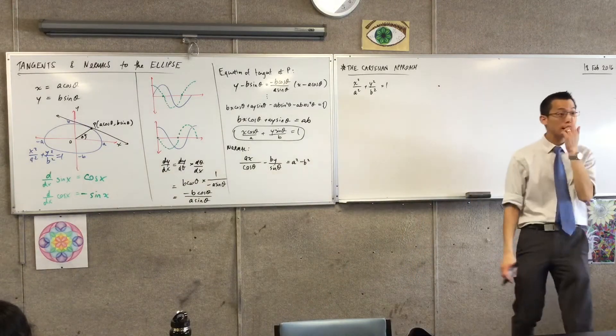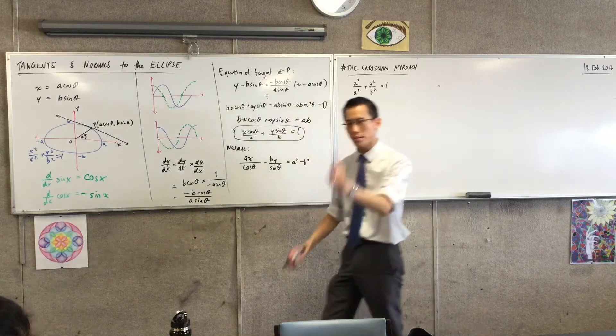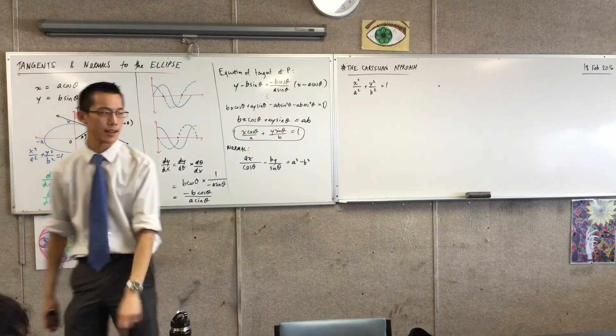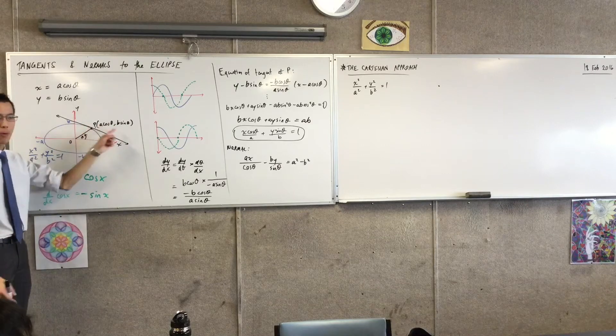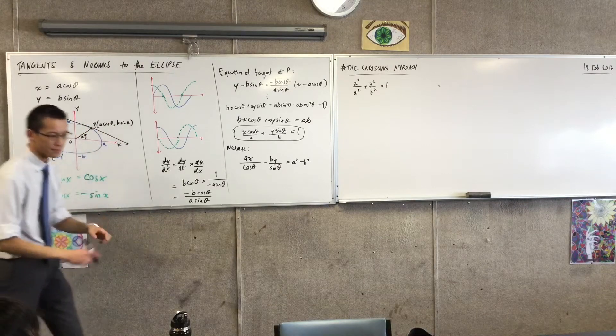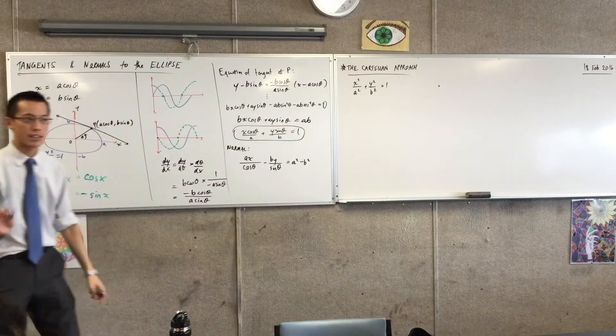As I'm hopefully going to show, I think the Cartesian approach is much more difficult. But there is one saving grace that the Cartesian approach has, which is that all I do is I name this point on the ellipse. Because I'm in Cartesian terms, I've got no theta to speak of.